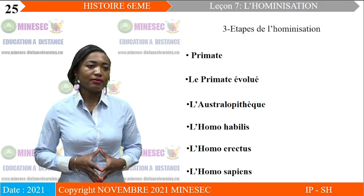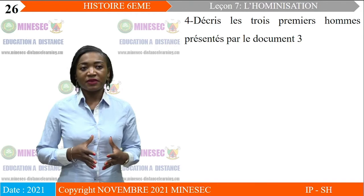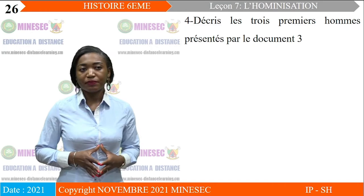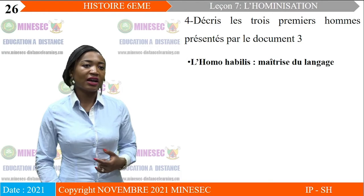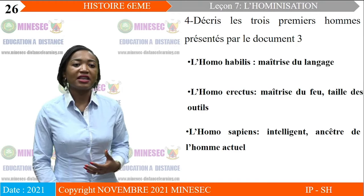Quatrième consigne : décrivez les trois premiers hommes présentés par le document 3. D'après ce document, les trois premiers hommes sont : l'homo habilis, maîtrisant le langage ; l'homo erectus, maîtrisant le feu et la taille des outils ; et enfin l'homo sapiens, homme intelligent et ancêtre de l'homme actuel.